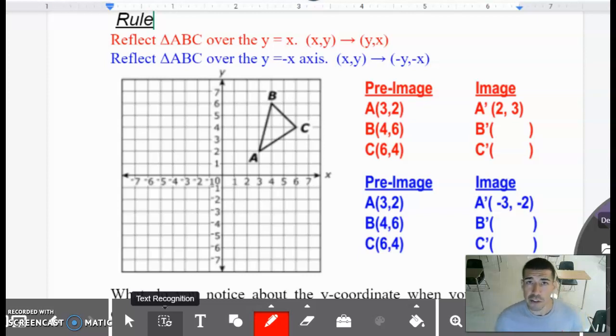Okay class, I will continue with reflections. My next two types of reflections will be on the diagonal lines, on the diagonals of the coordinate plane. Looking at red, look at the very first one I have here in red. It says reflect triangle ABC over the y equals x. The rule is so simple. You have x and y, you simply flip them.